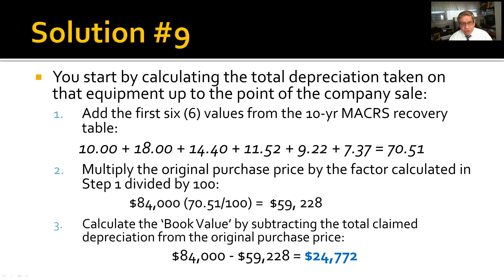Solution number nine: Start by calculating the total depreciation taken on that equipment up to the point of the company sale. Add the first six values from the 10-year MACRS recovery table given by the IRS, which are shown here. They total up to 70.51%. You then multiply the original purchase price by the factor calculated in step one. Finally, you calculate the book value by subtracting the total claimed depreciation from the original purchase price. The book value comes out to be $24,772.